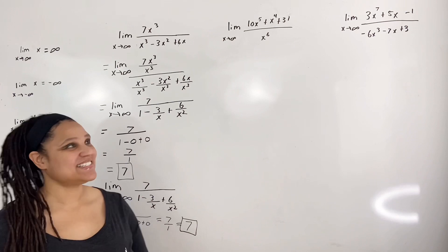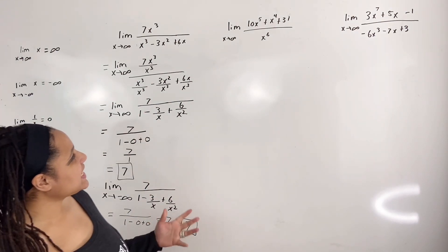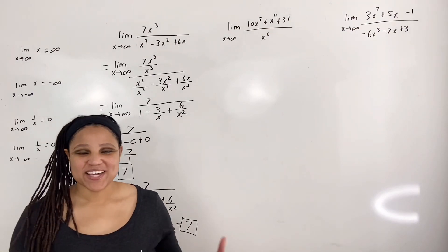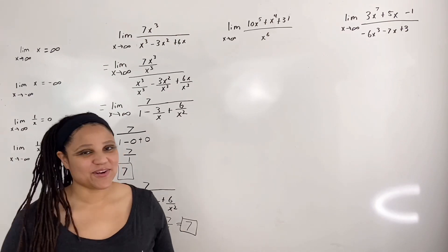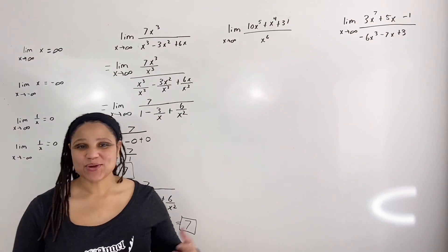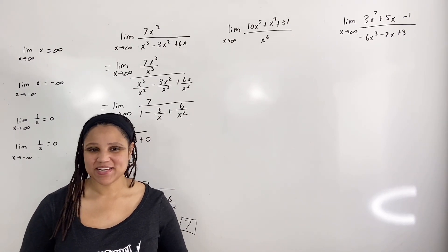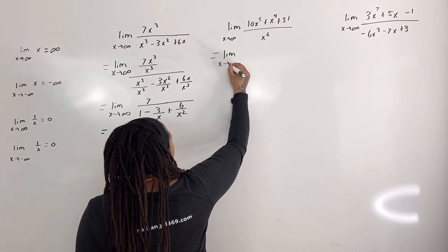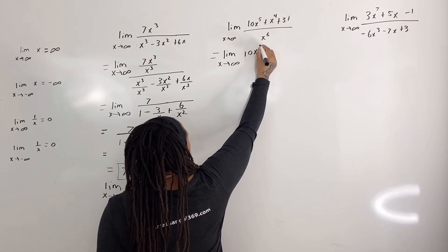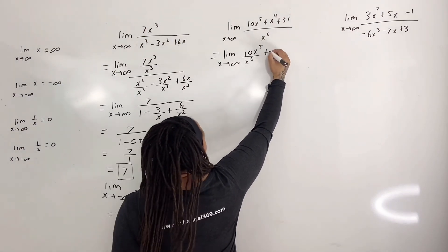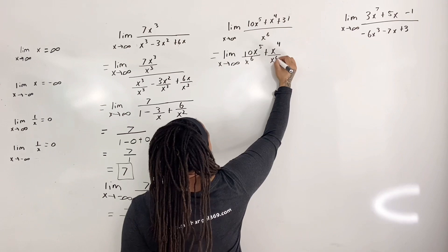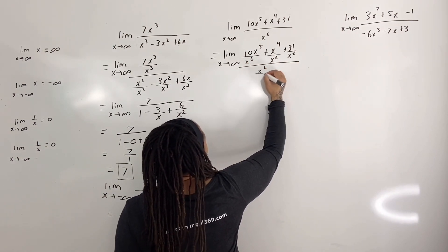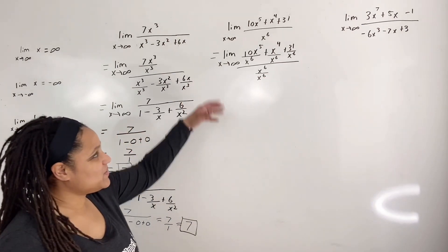For the next example, we have the limit as x approaches infinity of 10x to the fifth plus x to the fourth plus 31, all over x to the sixth. Again I want to look at the denominator and observe the highest degree, which is six. So we are going to divide the numerator and the denominator by x to the sixth. This gives us 10x to the fifth over x to the sixth, plus x to the fourth over x to the sixth, plus 31 over x to the sixth, all over x to the sixth over x to the sixth.